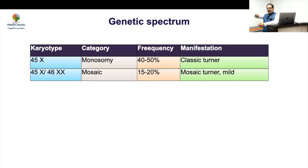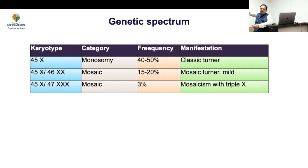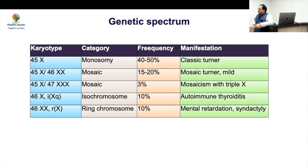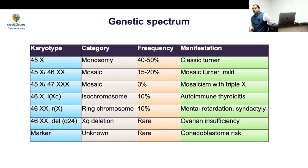To summarize the karyotype findings: the classical X0 represents 45% of cases and is most severe. Mosaicism produces the same features but milder. Triple X mosaicism will result in even milder manifestation, as more SHOX copies compensate for height. Isochromosome Xq behaves like XP deletion with more autoimmune thyroiditis. Ring chromosome produces more mental abnormalities and syndactyly. XQ deletion produces mainly ovarian insufficiency, and a marker chromosome carries a risk of malignancy.